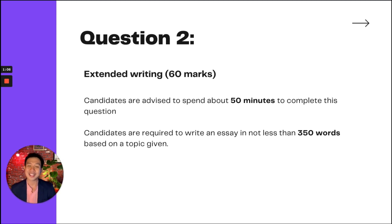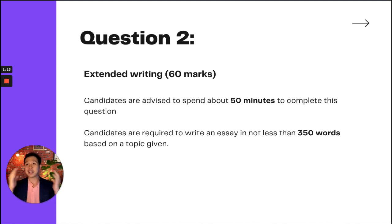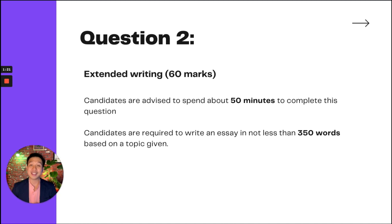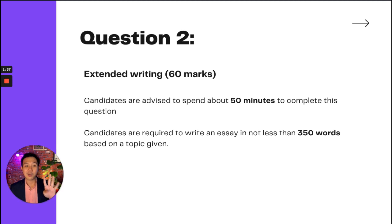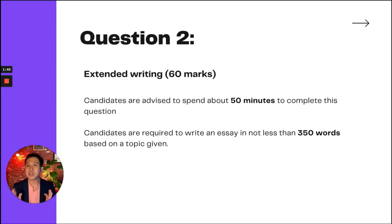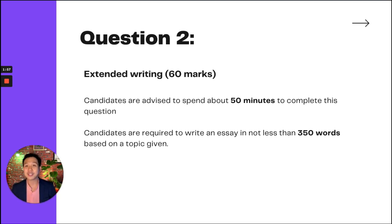Question 2 is extended writing, worth 60 marks. Previously in question 1 it's 40 marks, so this brings the total for the writing paper to 100 marks. Candidates are expected to spend about 50 minutes to complete this question, and are required to write an essay of not less than 350 words. Based on my experience as a teacher, 350 words is equivalent to about one and a half to two pages. If you can write that long, great — if you can write longer, go ahead.